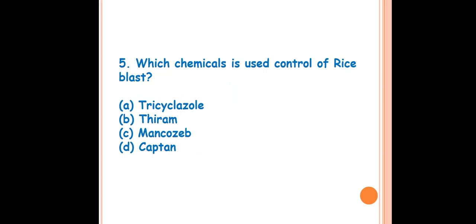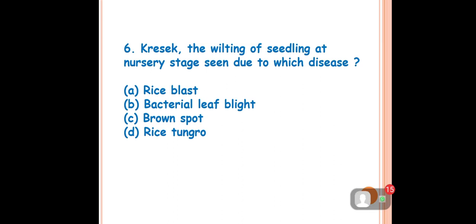Question 5: Which chemical is used to control rice blast? The answer is A — Tricyclazole. This is a very effective fungicide against rice blast and can be used as a foliar spray or as seed treatment. Question 6: Kresek — the wilting of seedlings at nursery stage — is seen due to which disease? The answer is bacterial leaf blight (BLB) of rice. At nursery stage, seedling wilting occurs and that symptom is known as Kresek.